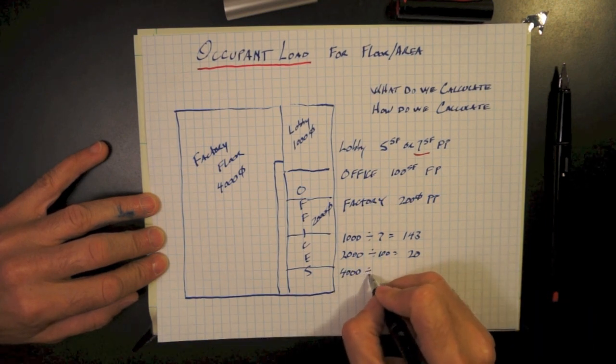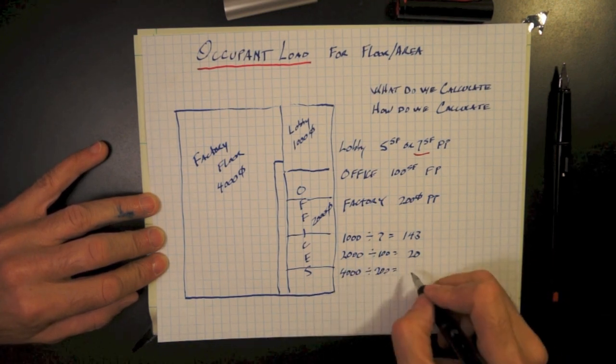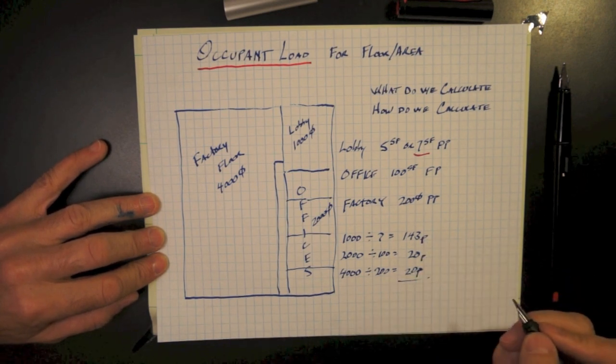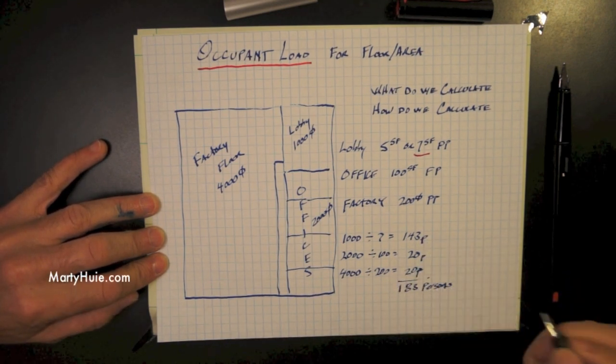And the factory floor at 4,000, divided by 200, gives us 20 people that can be on the factory floor. Totaling that up gives 183 people in this little building.